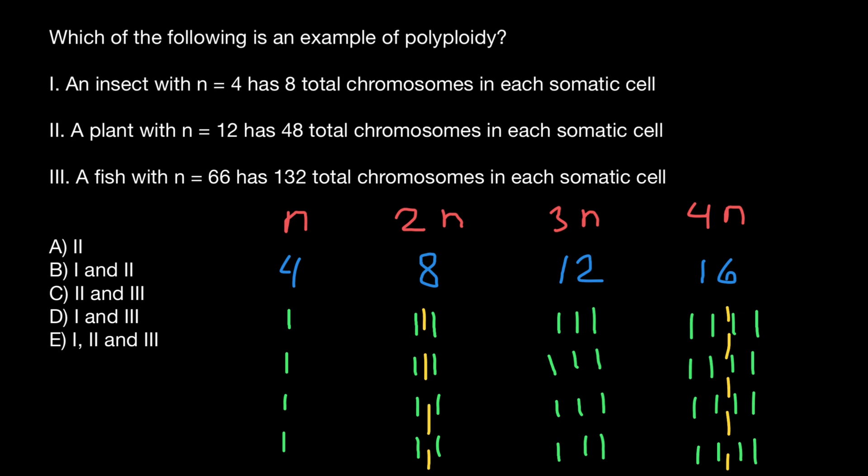But for example, in this case when organism has 3 sets of the chromosomes, it's going to be sterile and infertile. And when organism would have 5 sets of the chromosomes. Again, 5 we cannot divide by 2, and it's going to be sterile again.